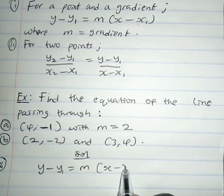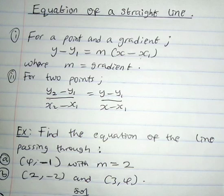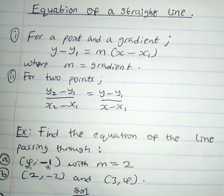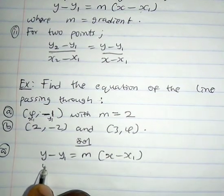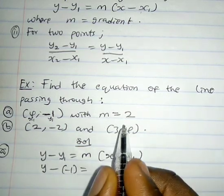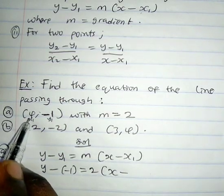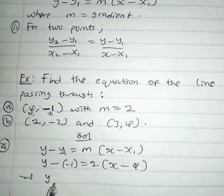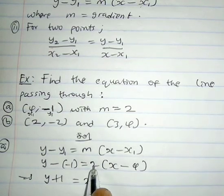We have point (4, -1), so let's call x1 = 4 and y1 = -1. This is our gradient m = 2. Plugging into the formula: y minus (-1) equals 2 times (x minus 4), which gives y plus 1 equals 2x minus 8.